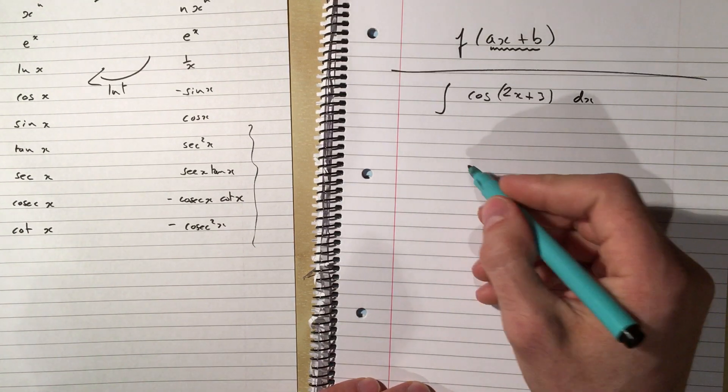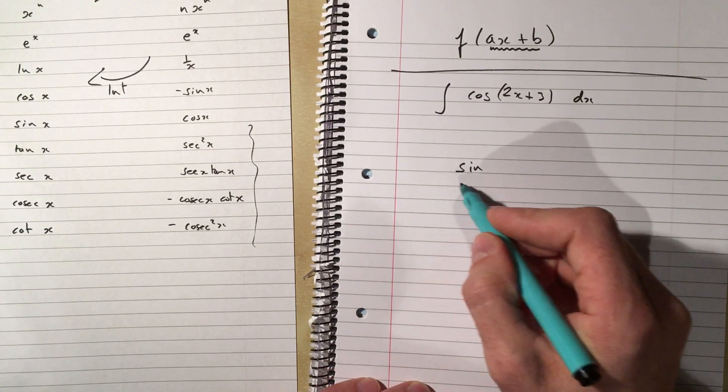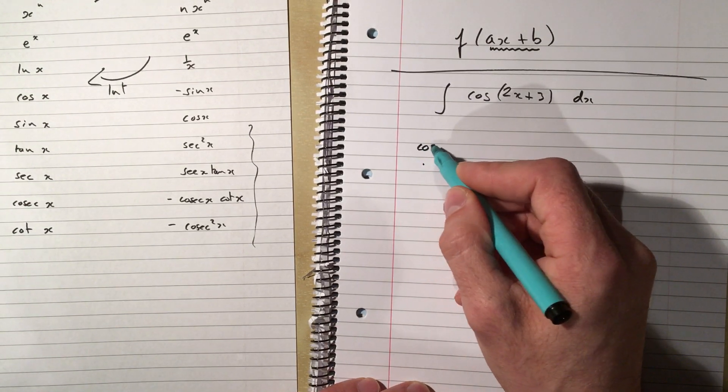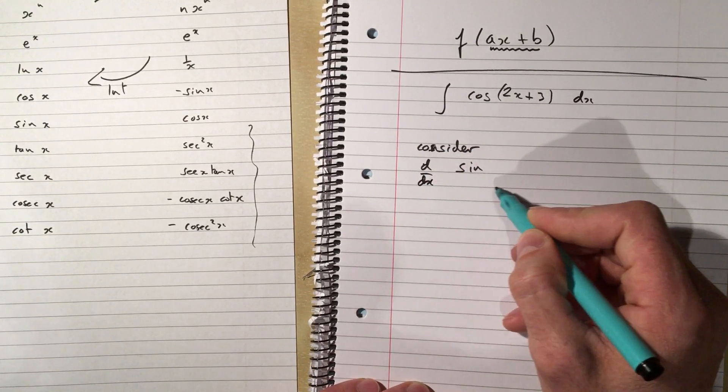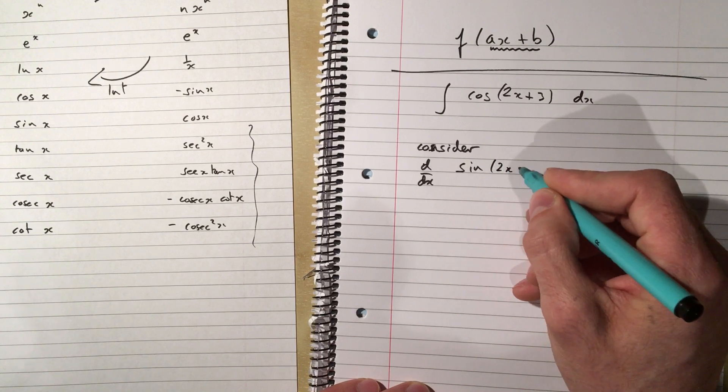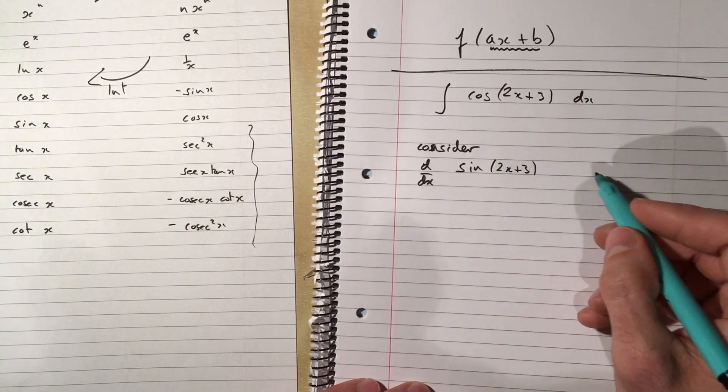So to get a cos, I must have started with something like a sine. So we would say, consider the derivative of sine of 2x plus 3. And you'll notice I've left a nice big gap in the front here, and that's because I'm going to need that in a minute.